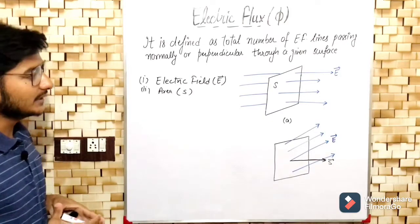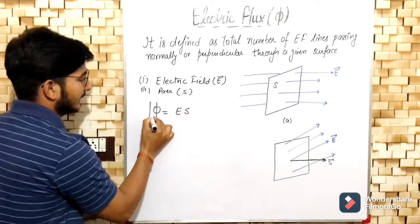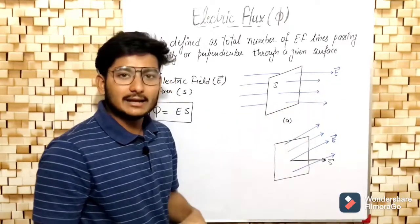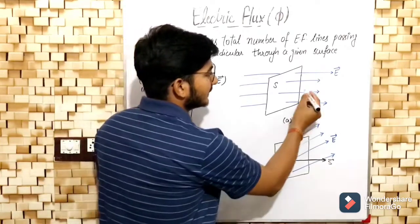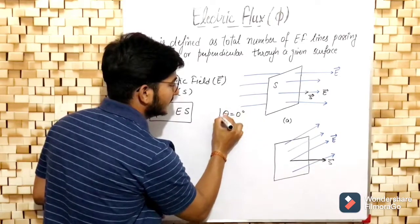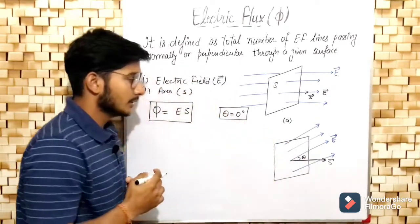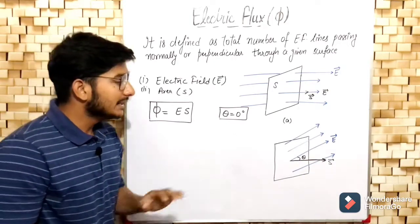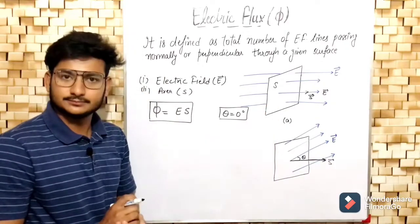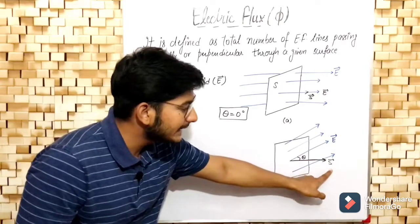Electric flux can be calculated as the product of electric field and area. When electric field is perpendicular to the area, the electric field and area vector are in the same direction, so theta equals zero. Now if the electric field makes any angle theta with the area vector, then according to the definition of electric flux, we take the component of the electric field perpendicular to the area — that is, along the area vector, which is E·cos(theta).